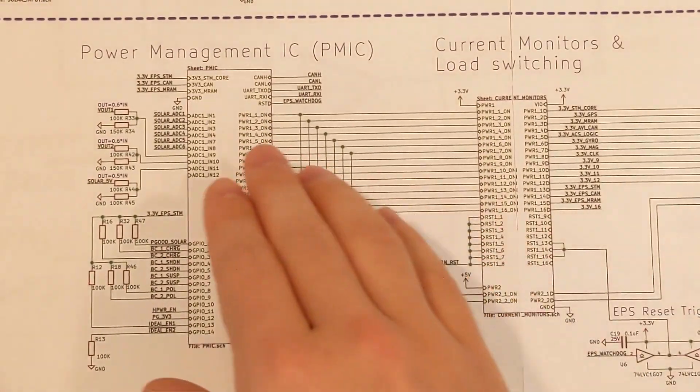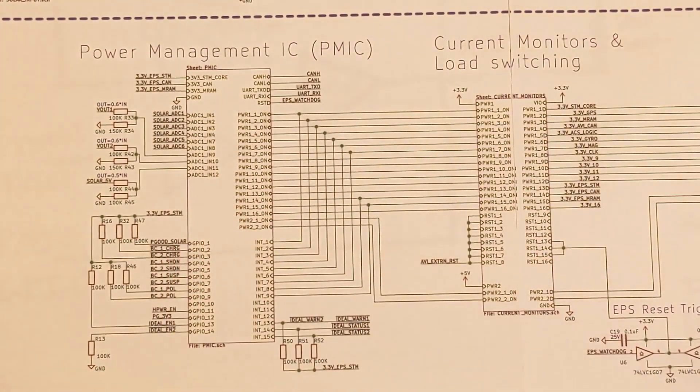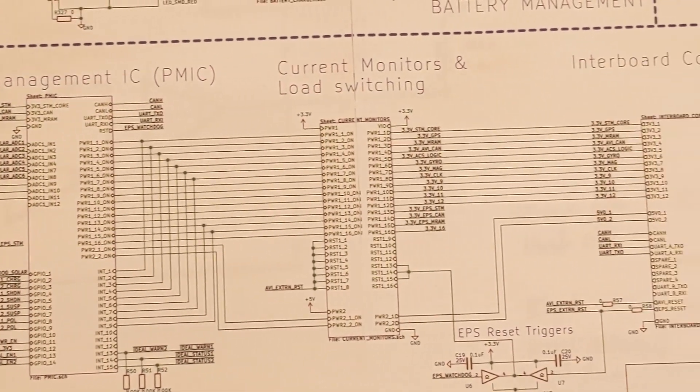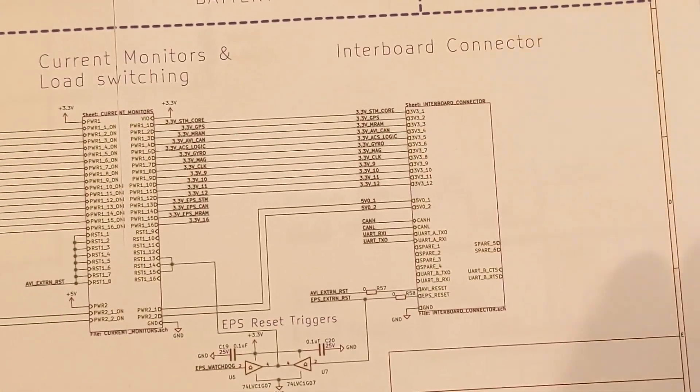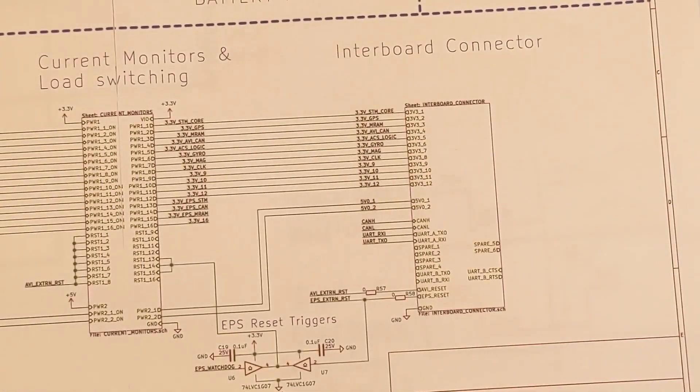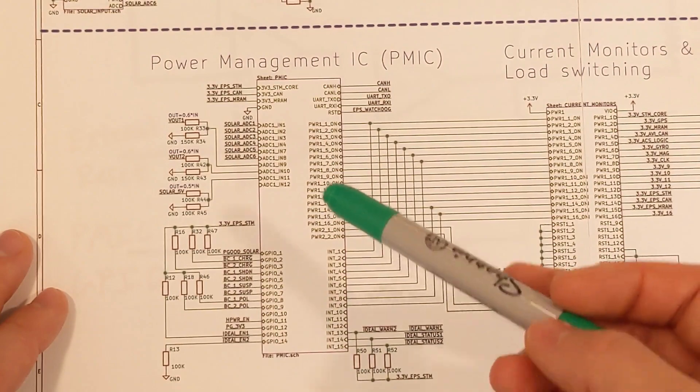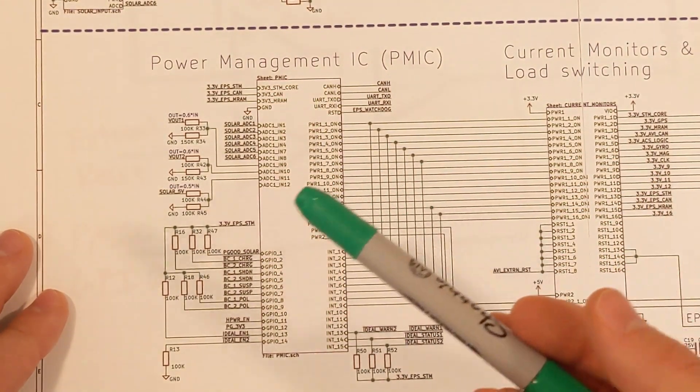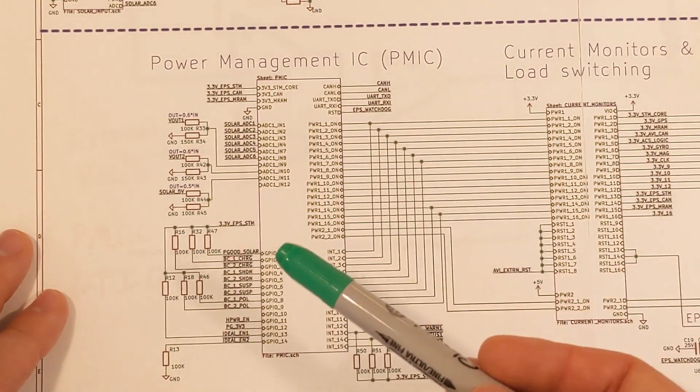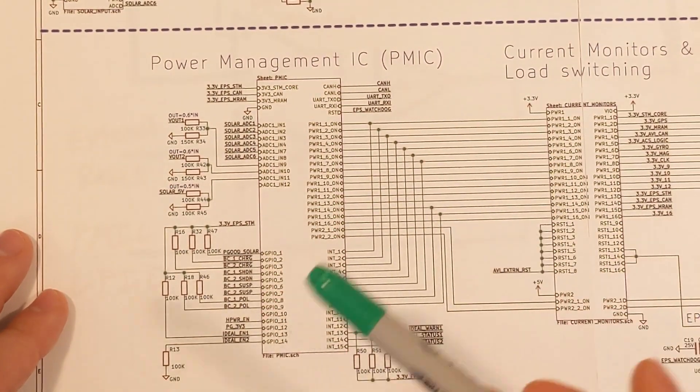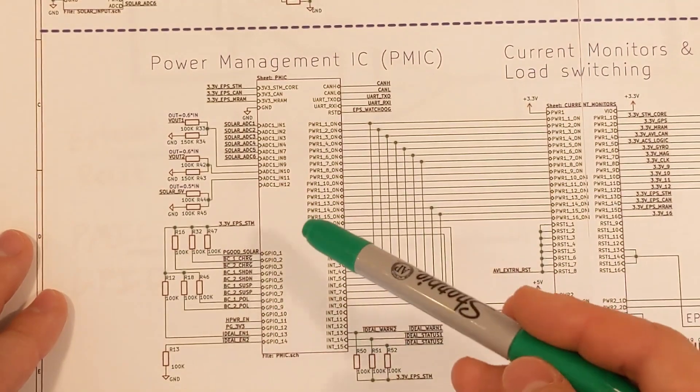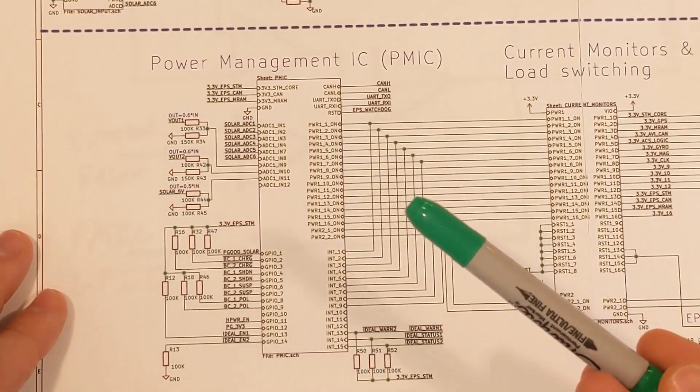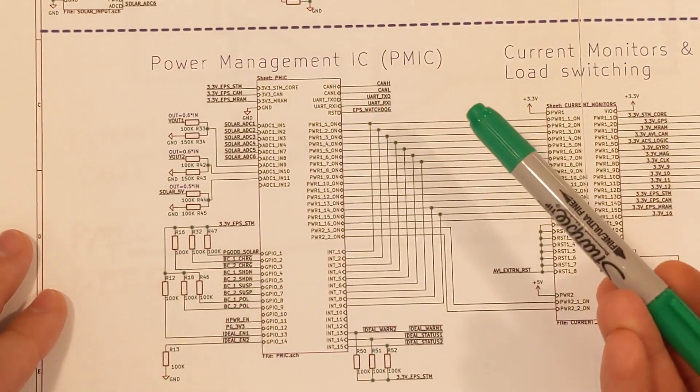Moving right along, we have the power management IC on the bottom half of the schematic. We have current monitors and load switching, and then a pretty simple interboard connector. Starting with the power management IC, the chip that I use in here isn't anything special. It's actually the same STM32 chip that I use for the avionics board. I figured more reuse is better and easier for me to make. So the schematic in here looks essentially the same, except it has no sensors.